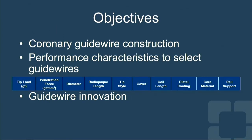What I want to do is go over the aspects of construction of a guide wire. We'll go over some of the performance characteristics that you can select to try to solve problems during a coronary intervention. When you go on a website and look at the guide wires, there's usually a chart with all these terms. Do you know what these terms mean? Do you know how you can take advantage of the information being relayed to understand what one wire would do versus another? And then finally, we'll talk a little bit about some guide wire innovation.